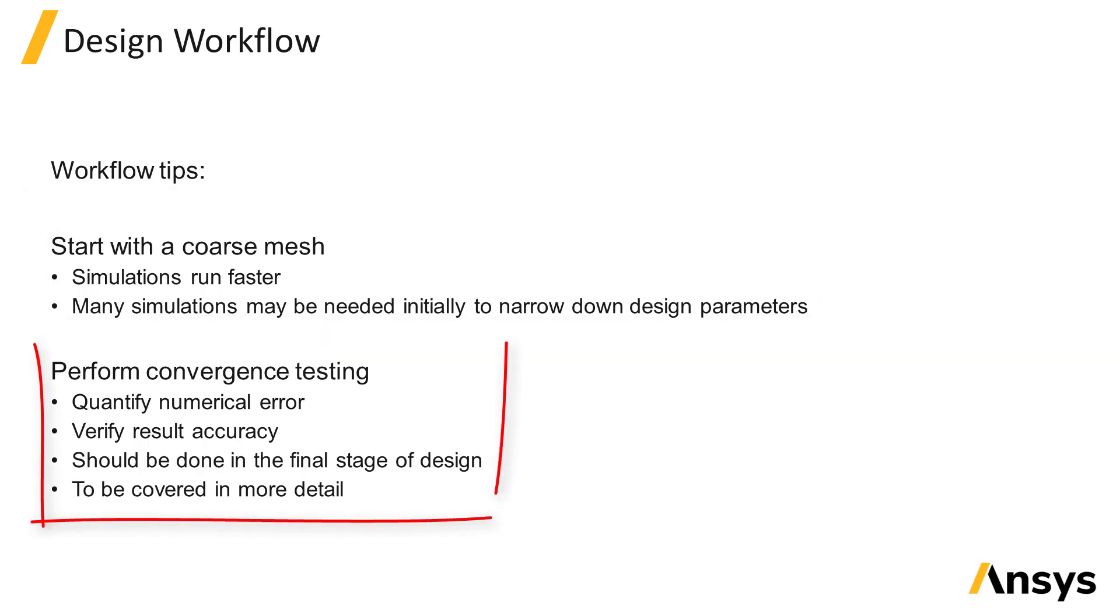Then convergence testing can be done to obtain high accuracy results as a final step. Convergence testing is a process of varying settings that have an effect on the numerical accuracy of simulations, such as the mesh step size, in order to quantify the level of numerical error to make sure that the numerical error in the simulation results is at an acceptable level. Convergence testing will be covered in detail in one of the following units.